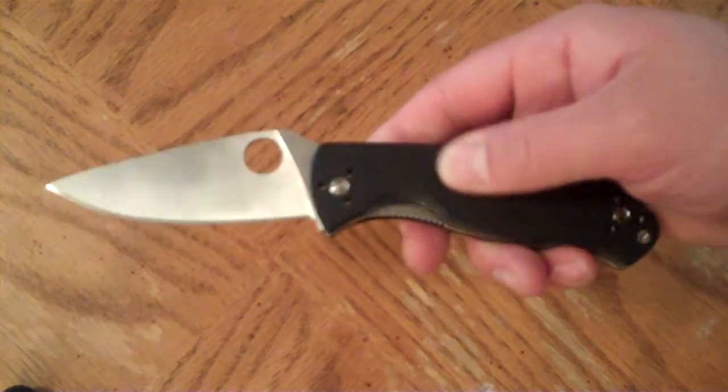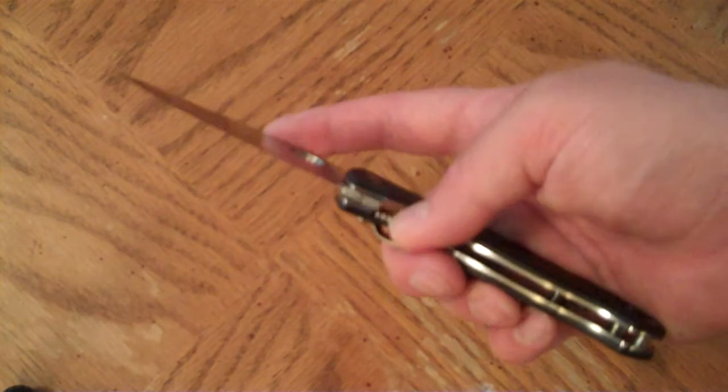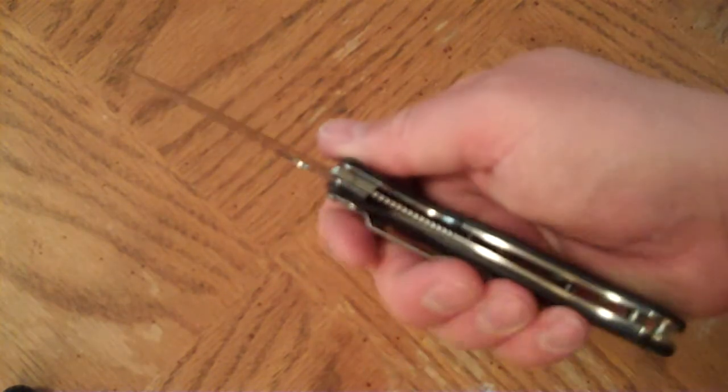I don't want to drag this out a ton longer. I do have G-10 handle scales and stainless steel liners, nice and thick. Lock up right there in the center. You can see a really good lock up there for that.